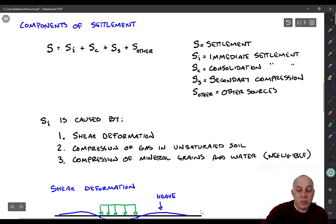Alright, let's go on now to talk about components of settlement. There are three primary components, and then there are some other sources that I'll briefly mention at the end of the lecture today. So capital S is the total amount of settlement, SI is immediate settlement, SC is consolidation, and SS is secondary compression, so SI, SC, and SS are the three primary sources of settlement that we worry about.